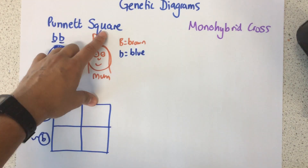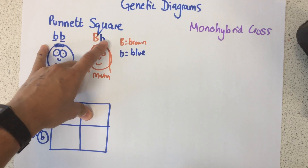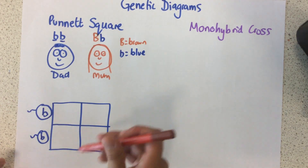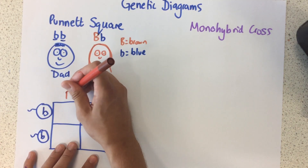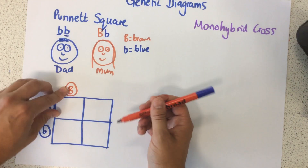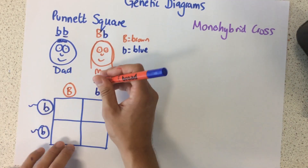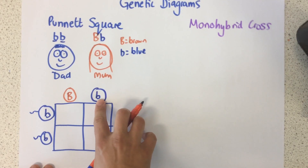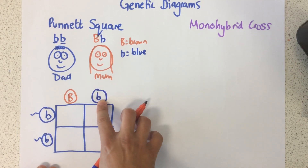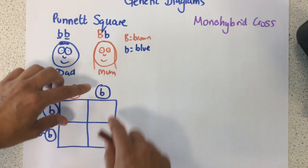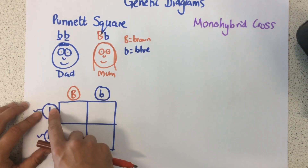Because Mum is heterozygous and has one of each type of allele, there's a 50% chance that her egg cells will contain that B, the dominant allele, and a 50% chance that it will contain the recessive allele. All we need to do now to complete the Punnett square is see the combinations of these different gametes.